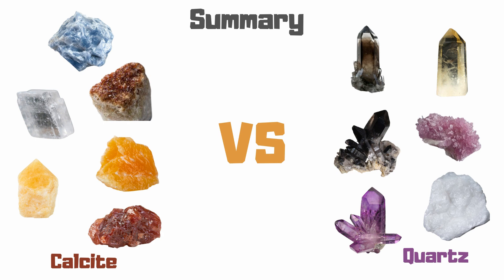2. While calcite has a luster that is vitreous to resinous to dull, quartz has a glassy to vitreous luster. 3. Both calcite and quartz are transparent and translucent. However, cryptocrystalline is translucent to opaque.